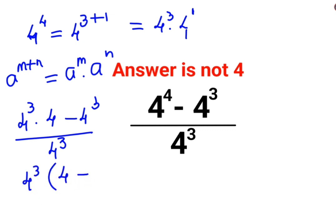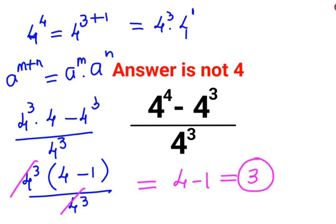So we are left with 4 minus 1 upon 4 raised to 3. Now this and this gets cancelled. So what you're left with is 4 minus 1. The answer for this question is just 3.